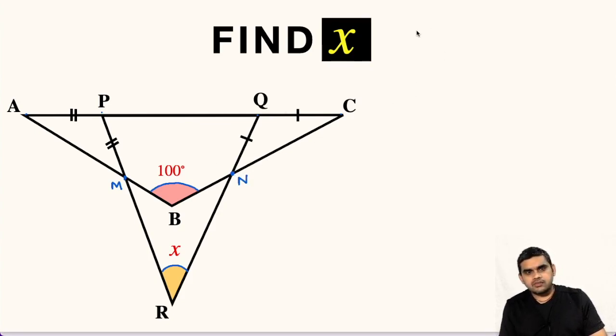So first of all, let us focus on triangle ABC. So I am drawing it separately. This is B, this angle is more than 90, 100 degrees. This point is A and C.